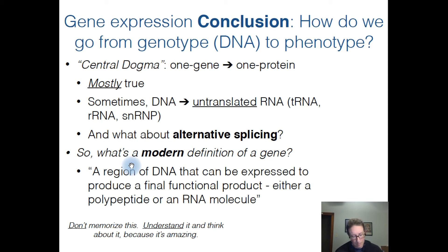Spend some time thinking about those different types of mutations and their consequences for gene translation. To recap briefly: some mutations, especially point mutations, might not do much — those are silent mutations. Other mutations could cause missense or nonsense — either a change in the amino acids or a premature stop codon — and those will have huge impacts on the protein product produced for that gene.